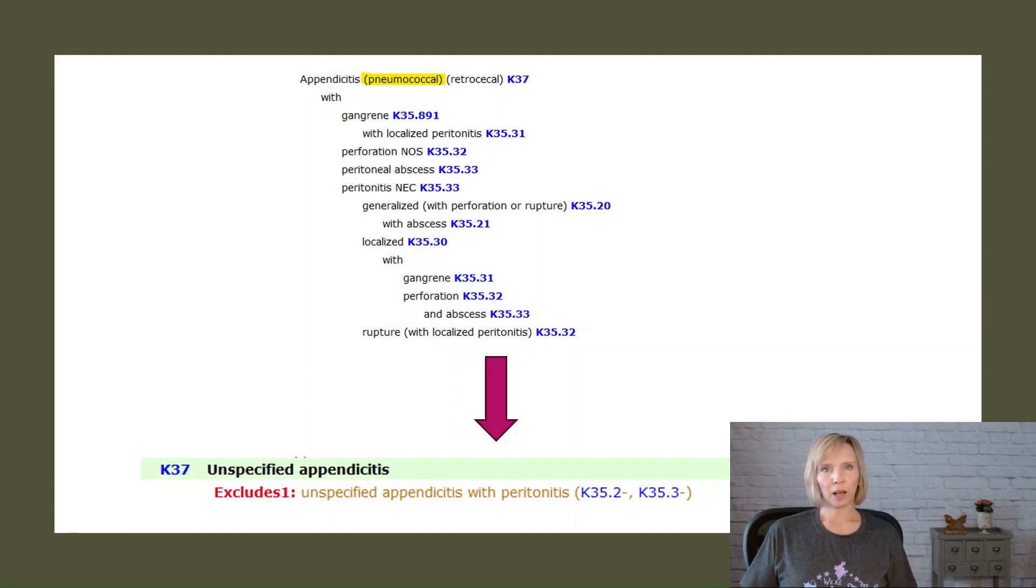Non-essential modifiers are useful to help determine that you've arrived at the correct code when the physician has documented an alternate term or more information for the condition than is found in the code description.